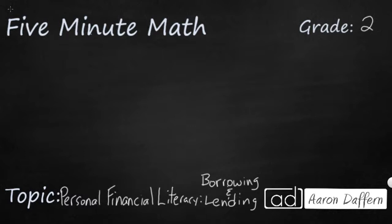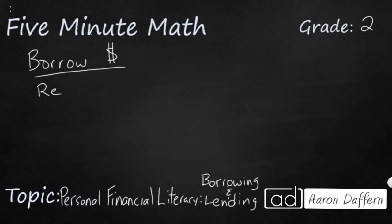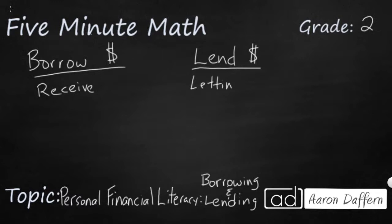Let's make sure we understand what these two words mean. When you borrow money, that means you are receiving it — you are asking somebody else for money, getting it from them, and you are going to pay them back later. When you're lending money, that means you're the person giving money, letting somebody else have the money, and obviously you're hoping that they will pay you back. Sometimes this makes sense, but there are some times when it might not be a good idea to borrow or to lend money to somebody else.